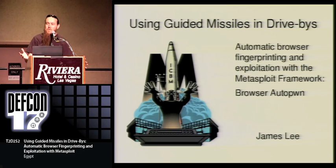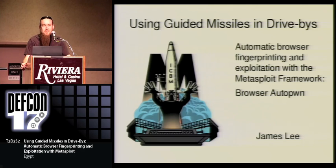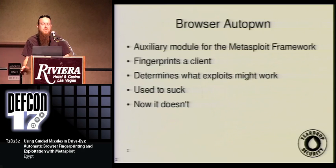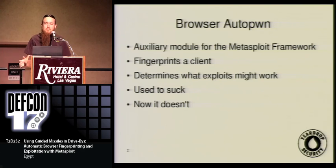I'm going to be talking about drive-bys, automatic browser fingerprinting, and exploitation with the Metasploit Framework. The tool itself is called Browser Autopwn, and it's an auxiliary module for the Metasploit Framework. There are exploit modules that everybody is familiar with, and also auxiliary modules, and that's what Browser Autopwn is. The first thing it does is fingerprint a client to try to determine what exploits might work.